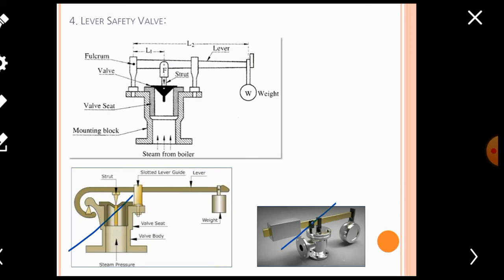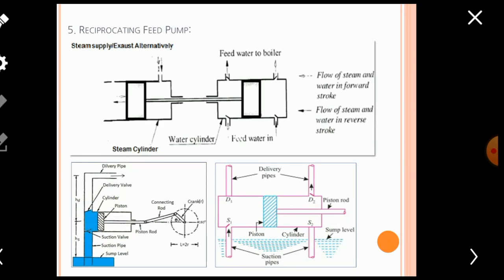The fifth type of boiler mounting is the reciprocating feed pump. In medium-pressure, high-pressure, or supercritical boilers, a large quantity of water is needed. In low-pressure boilers water enters the boiler shell by gravitational force, but in large-capacity boilers where large amounts of power need to be produced, water must be pumped forcefully inside the boiler shell. The mounting used for feeding or pumping large quantities of water into the boiler shell is the feed pump.